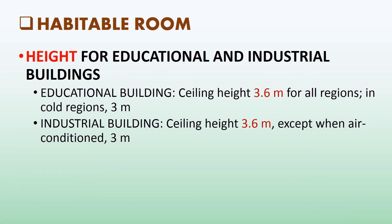For educational and industrial buildings: Educational buildings require a ceiling height of 3.6 meters for all regions; in cold regions, 3 meters is sufficient. For industrial buildings, the minimum ceiling height is 3.6 meters, except when air-conditioned, where 3 meters is sufficient.